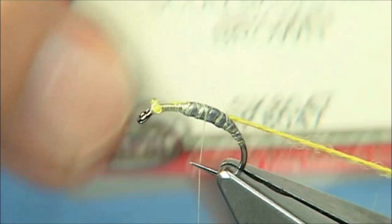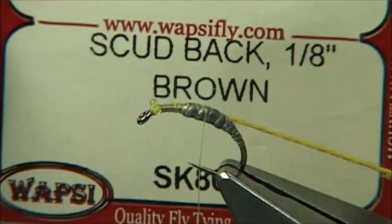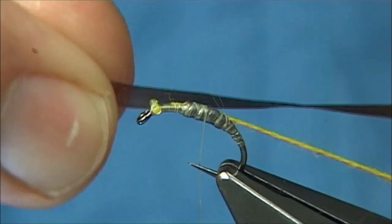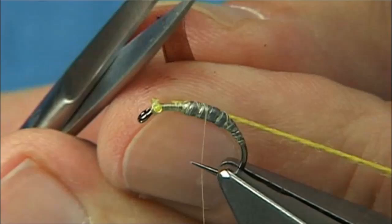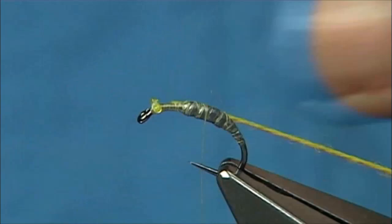Now for the back, I am going to use this stuff here. It's called scud back. The width is one eighth brown and it's ideal for the back of these nymphs or the pupa. The first thing I do is cut it into a point, just like that. It makes it much easier to catch the point.